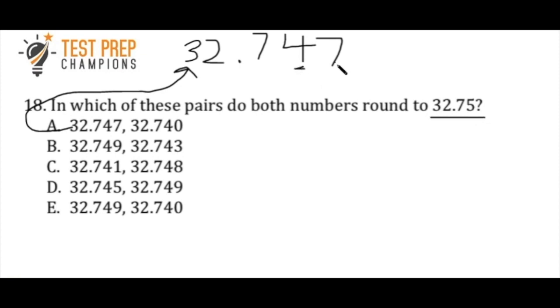So if we look at the 4 here, and look at the number directly to the right of it, if that number is a 5 or greater, then this will round up to 32.75. So since it's 7, this number here, 32.747, will in fact round up to 32.75.